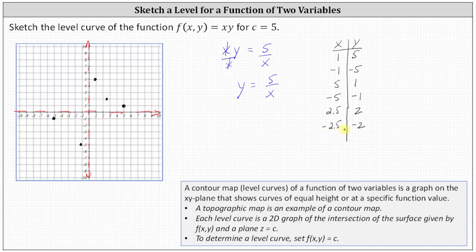And now we have enough points to make a nice accurate graph of the level curve. And again the curve will pass through the points and approach the vertical and horizontal asymptotes. So notice we have one piece in quadrant one and another piece in quadrant three. The graph looks something like this.